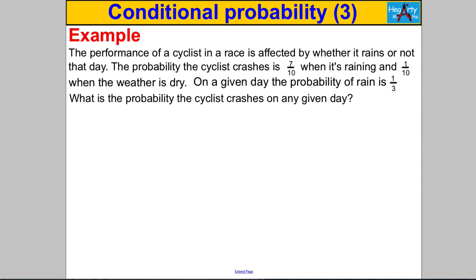Let's have another question. The performance of a cyclist in a race is affected by whether it rains. The probability the cyclist crashes is 7 tenths when it's raining and 1 tenth when it's dry — a clear conditional probability scenario. On a given day the probability of rain is one third. What is the probability the cyclist crashes? Let's set up a tree diagram. We should consider rain or no rain first, since the crash probability depends on that.